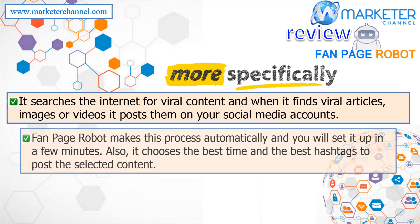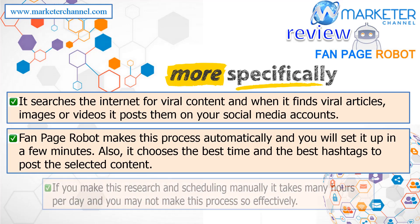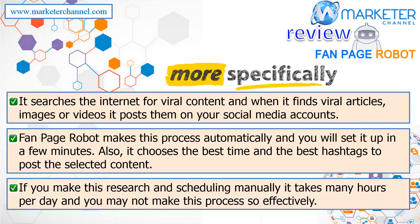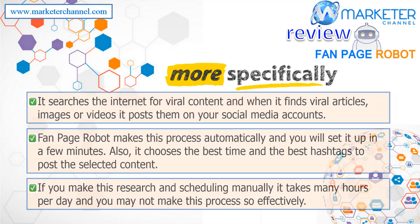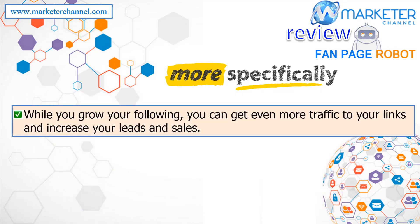Fanpage Robot makes this process automatic and you will set it up in a few minutes. It also chooses the best time and the best hashtags to post the selected content. If you do this research and scheduling manually, it takes many hours per day and you may not do it as effectively. While you grow your following, you can get even more traffic to your links and increase your leads and sales.